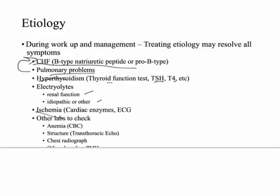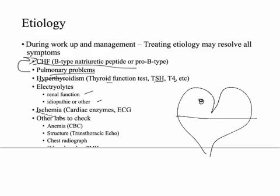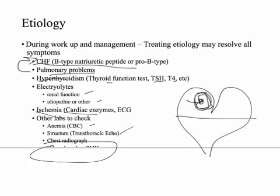Ischemia is another cause: a heart attack can create a new electrical pathway where electricity flows in a circle and keeps re-exciting the heart. If this is new acute-onset AFib, check cardiac enzymes. For long-standing AFib, look at the ECG for past evidence of MI. Also get a CBC looking for anemia, a transthoracic echo for structure, a chest radiograph, and review past medical history for any associated illnesses or pathologies explaining AFib.